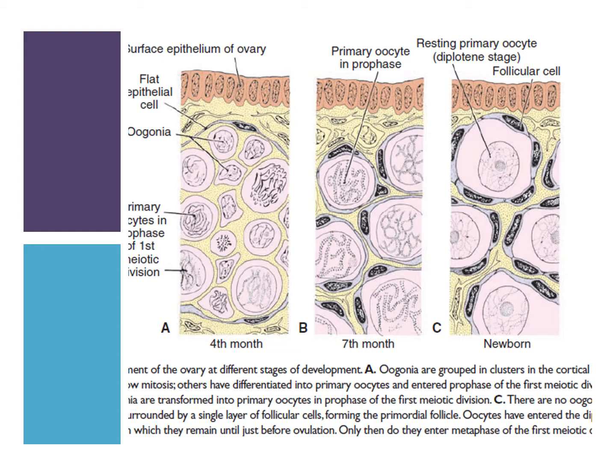Some of these would become atretic. Figure B shows the seventh month of prenatal development. Most oogonia would have degenerated except those found at the surface, and all surviving primary oocytes would have already entered prophase I of meiosis. Each cell is surrounded by follicular cells, forming what is called the primordial follicle. The cells are arrested at the diplotene stage of prophase I because of the oocyte maturation inhibitor secreted by the follicular cells.